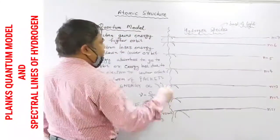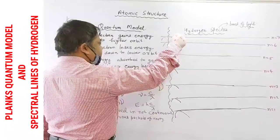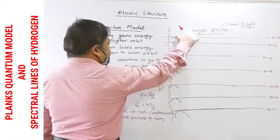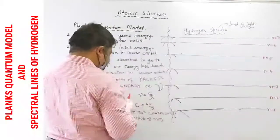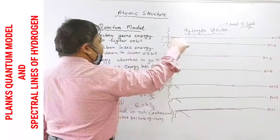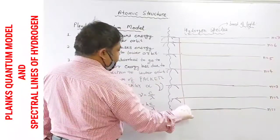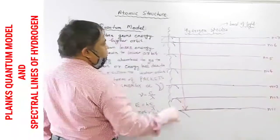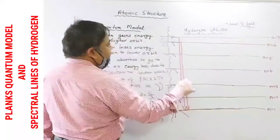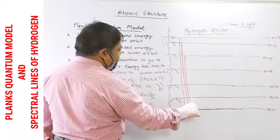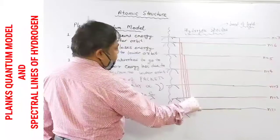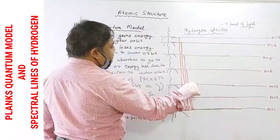So if the electron falls from energy level seven, so how can it fall? It can fall from seven to one. It can fall from six to one. It can fall from five to one. It can fall from four to one. Then three to one.